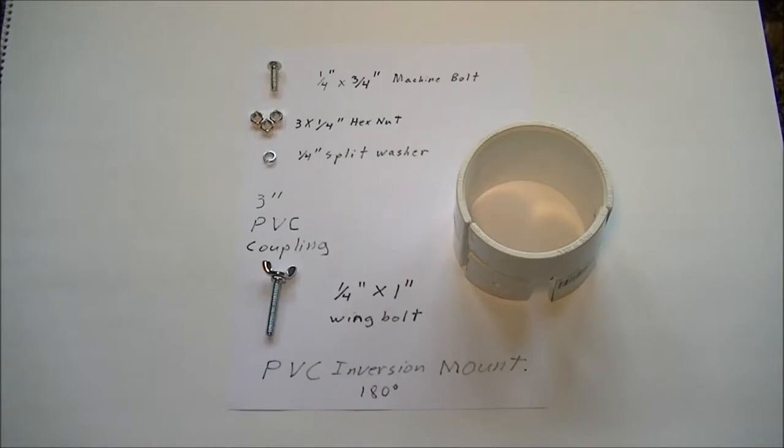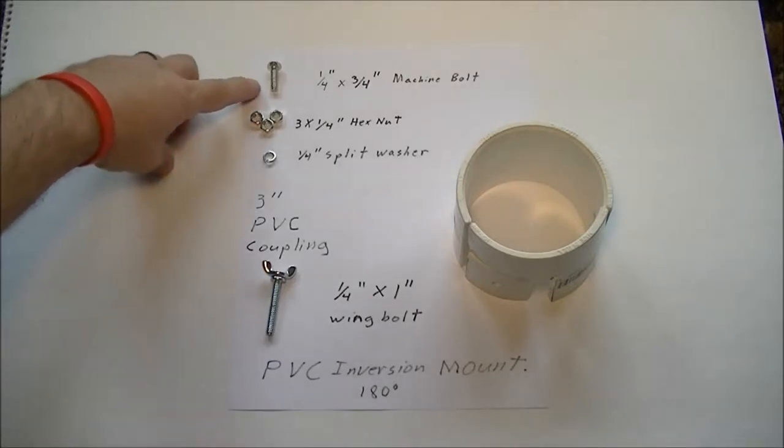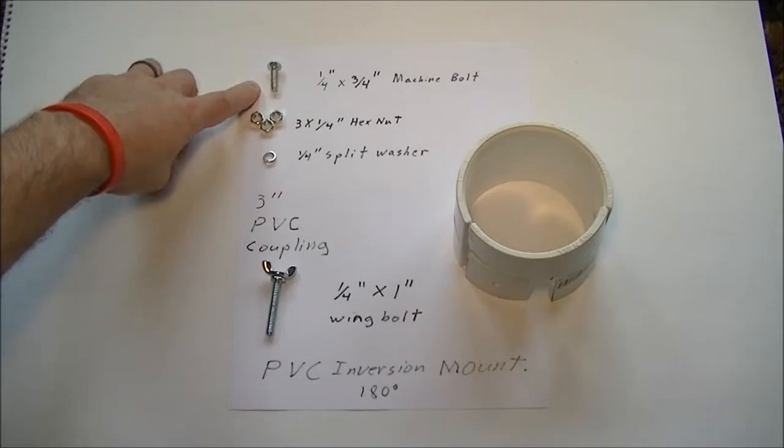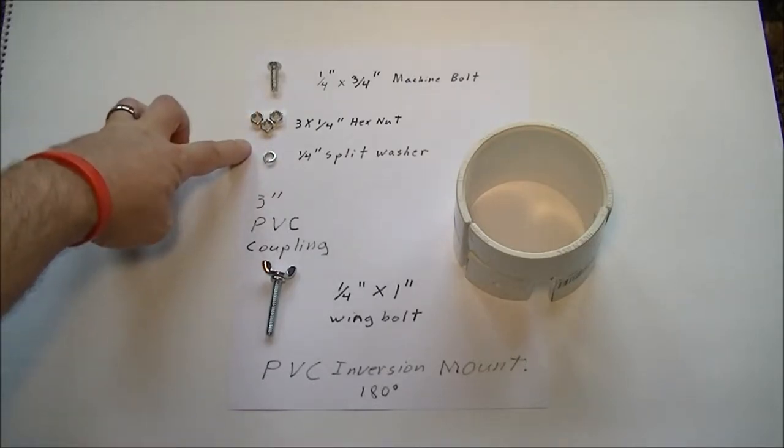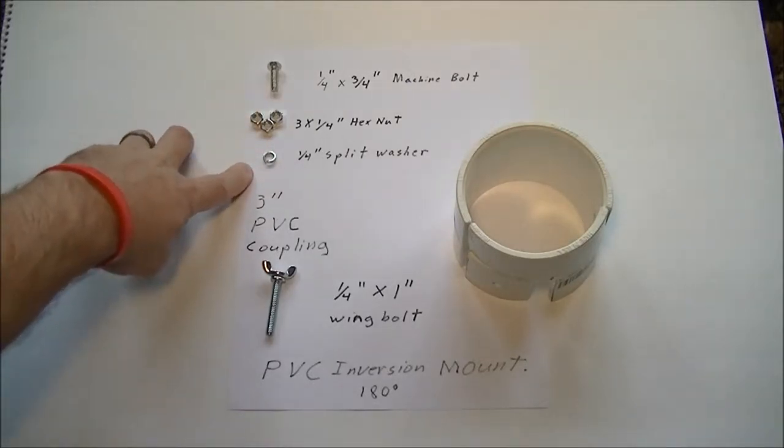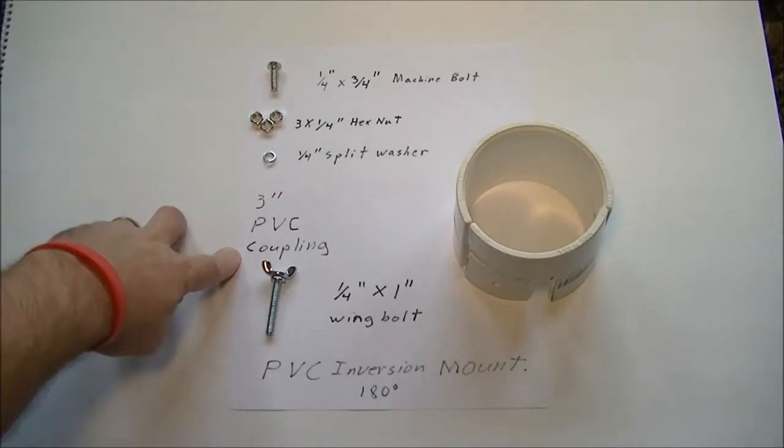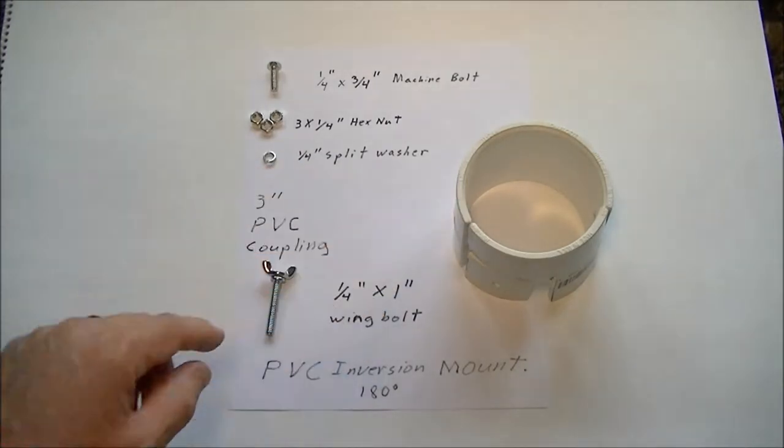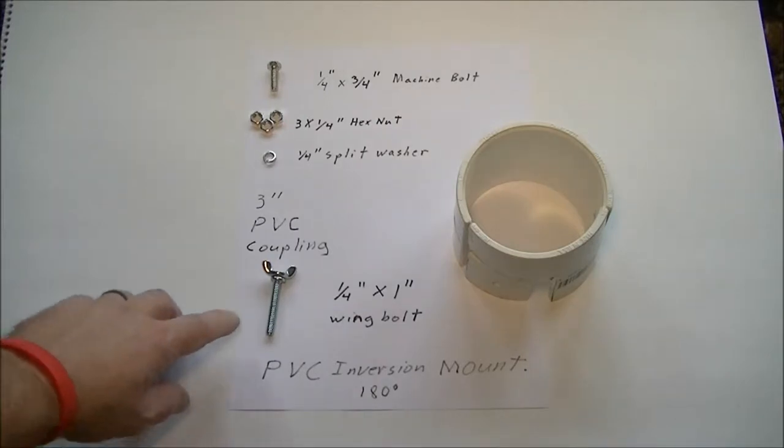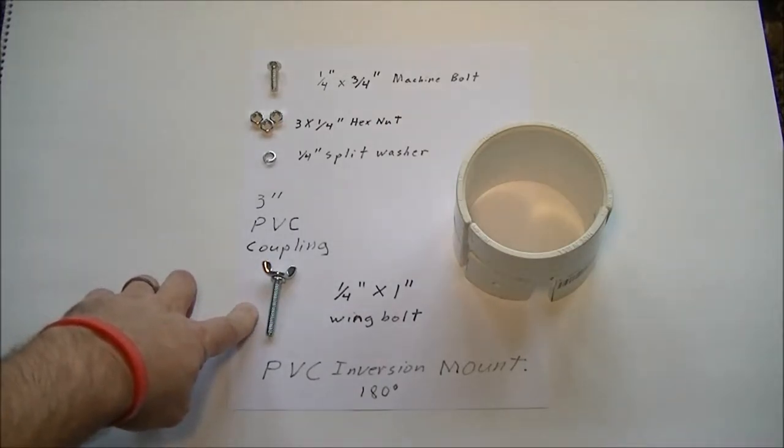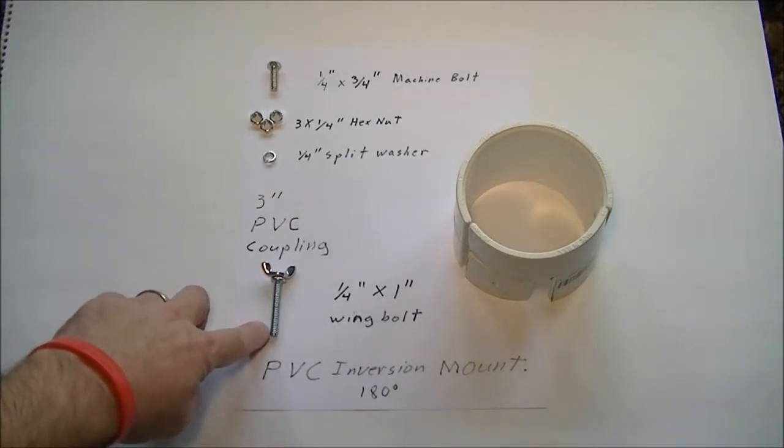Here are the parts you're going to need to make this inversion mount. You're going to need one 1¼ by 3¼ inch machine bolt, ¾ inch hex nuts, a ¼ inch split washer, a 3 inch PVC coupling. You can get this at Home Depot or Lowe's or any home hardware kind of store. One ¼ inch by 1 inch wing bolt. This is going to be used for mounting the camera to it.